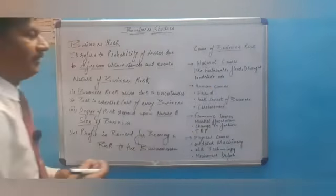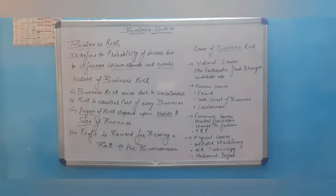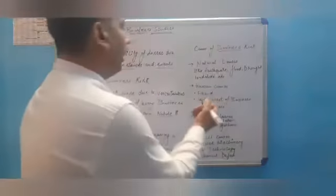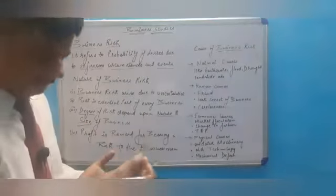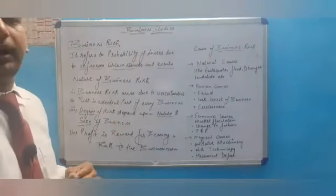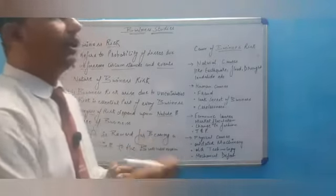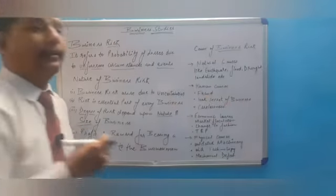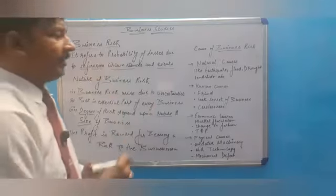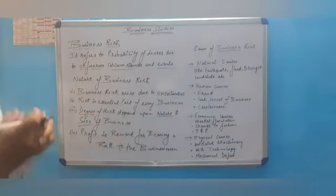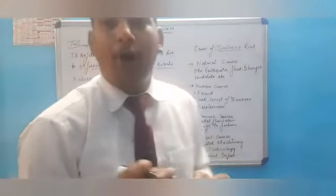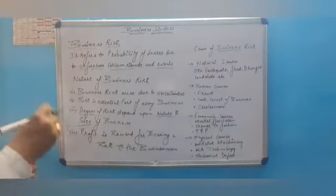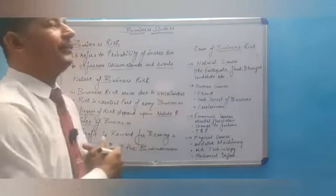Human causes include fraud by persons working in your organization. Employees making fraud against management, or leaking the secrets of the business — for example, Coca-Cola does not leak its secret formula. If any employee of Coca-Cola leaks their secret, the company suffers losses.